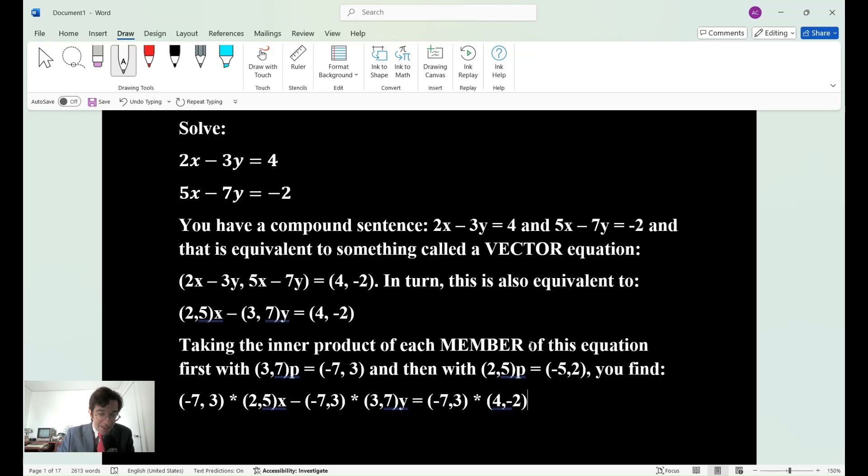So you can write the system in this way into this vector equation you see on the board, and you can also write it equivalent. You can make it equivalent to (2,5)x + (-3,7)y = (4,-2). Now there's something called the inner product. If you take the inner product of each member, and I put it in capital letters because you should know what the vocabulary is. All equations have a member. You take the first with (3,7), that P means perpendicular. So if it's perpendicular, the coordinates become (-7,3). And then with (2,5) perpendicular, the perpendicular of that is (-5,2).